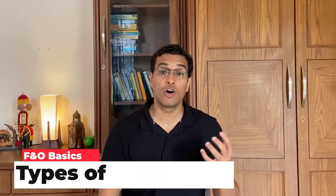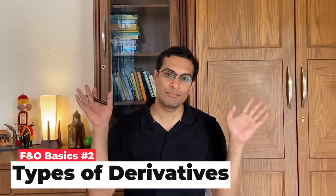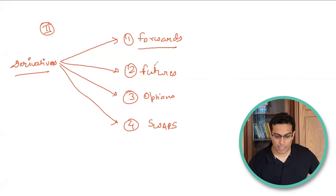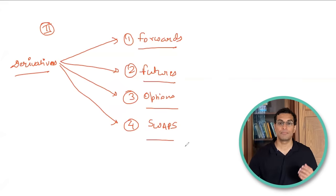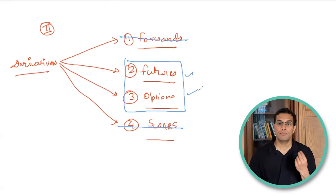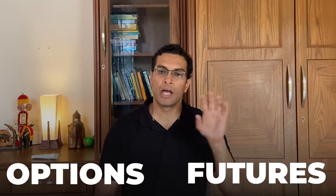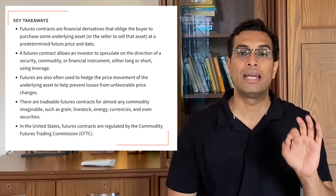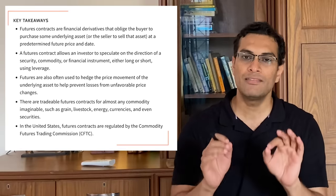Point number two: how many types of derivatives are there? From a stock market perspective, there are four types: forwards, futures, options, and swaps. In India, forwards and swaps are not very popular, and we primarily deal in futures or options. Let me quickly explain the difference between futures and options.